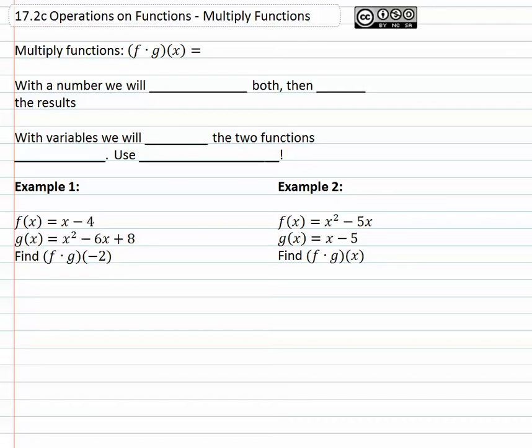As I set this up, I want to notice that when we multiply functions, the notation is the closed dot of multiplication. That's very important because we're going to eventually look at another function that's an open circle, an open dot, and that means something completely different. So take the time to notice, are we multiplying the functions or doing something else?